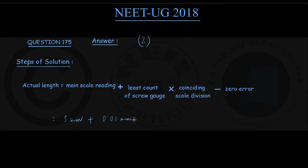Multiplied by coinciding scale division - they have said the zero of circular scale division coincides with 25 divisions above the reference level. So coinciding scale division is 25.